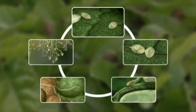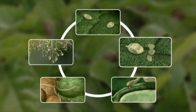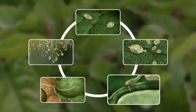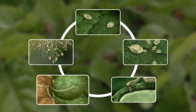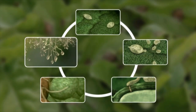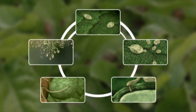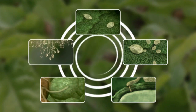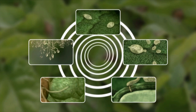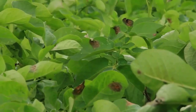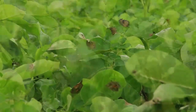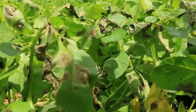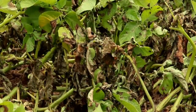This cycle — sporangial dissemination, release of zoospores, infection of a host plant, mycelium formation in the leaf, and sporulation — can continue repeating, especially if weather conditions are moist. Infection pressure increases exponentially, and more and more plants show the typical late blight symptoms. The damaged leaf area increases rapidly from day to day.